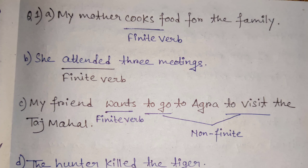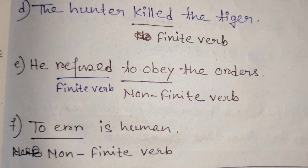My friend wants to go to Agra to visit the Taj Mahal. Here 'to go' and 'to visit' are non-finite verbs.